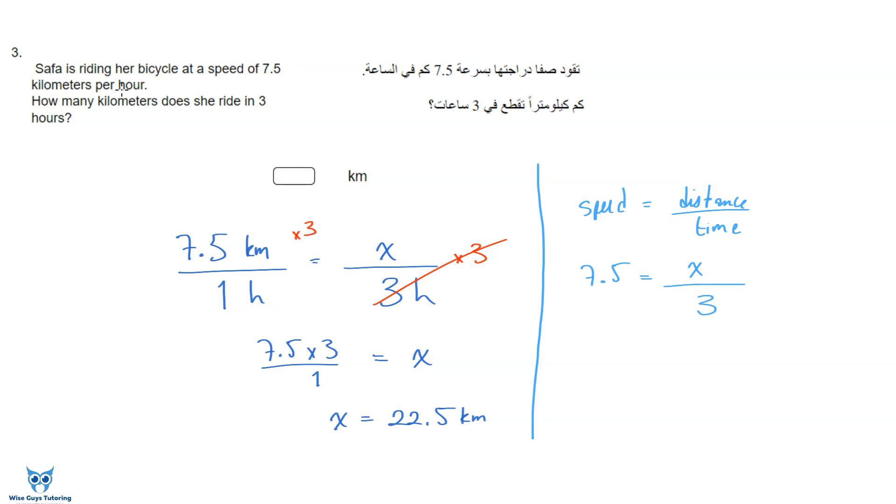So if I have the speed which is 7.5 kilometers per hour and I have the time which is three hours, so this one I have and this one I have, I'm only looking for distance. So it ends up being the exact same equation. Of course if you're looking for x you just multiply both sides by three and that will give you that x is equal to 22.5 kilometers. So you can think of it either way. They're the exact same thing. You can think of it as a proportion, right? 7.5 in one hour how much in three hours, or you can use the speed distance time equation which is basically the same and you multiply by three to get rid of your denominator to get x is 22.5 kilometers.